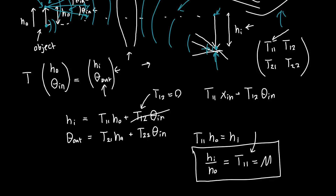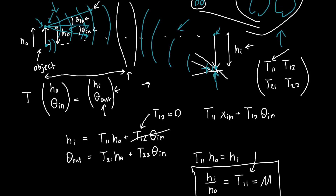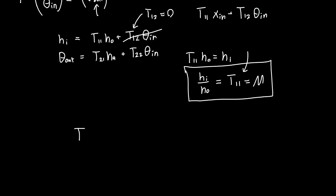Now all we need to do is solve for the transfer matrix. The single thin lens system is arguably the most useful one, so let's figure out its magnification. In this simple system, we propagate a distance sO, go through the lens, and then propagate another distance sI to the image. The overall transfer matrix T is written as propagation by sI acting on the lens transfer matrix with focal length F, times propagation by the distance sO — in that order because we propagate sO first, then go through the lens, then propagate sI.